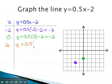y = 0.5(2) - 2. Working this out gives us y = -1. When x is 2, y is -1. 2 to the right, 1 down.